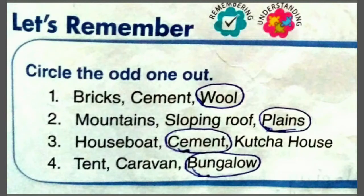Second set: mountains, sloping roof and plains. तो ये तीनों में से odd है plains. क्योंकि mountains एक place है और उसके उपर जो house होते है उसके रूफ sloping होते है — तो mountains और sloping roof वो दोनों सेम है, और plains वो अलग है.